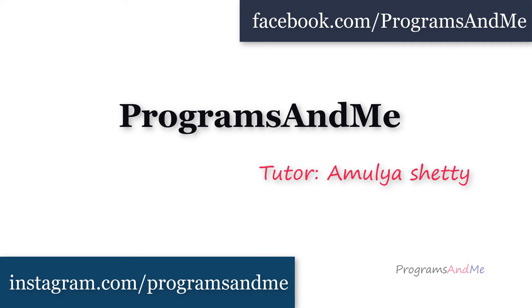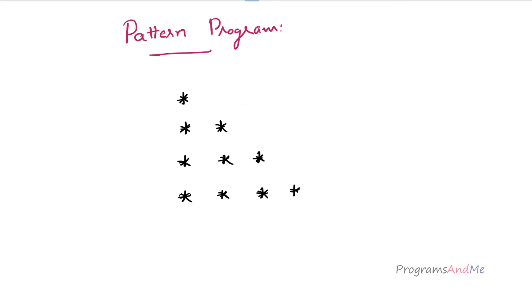Hello everyone and welcome to my YouTube channel. Today in this tutorial we are writing a pattern program — we want to print a Python program to print stars in the right triangle shape. We can write this program in different ways; here we are using nested for loops to print this pattern.